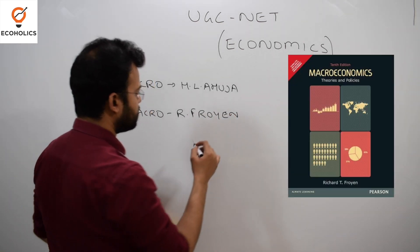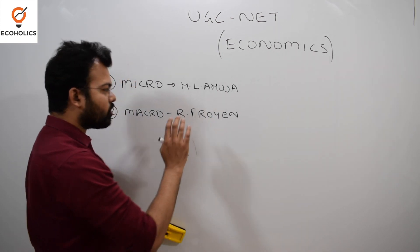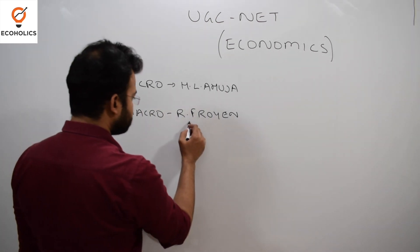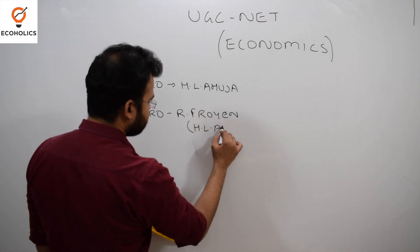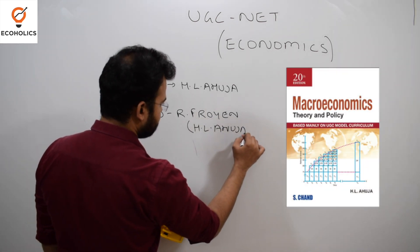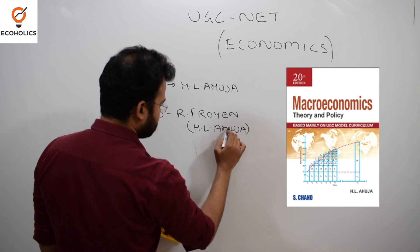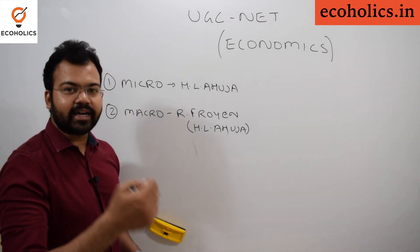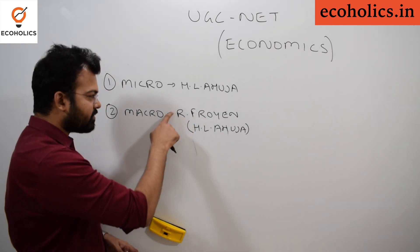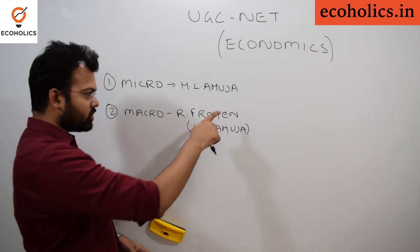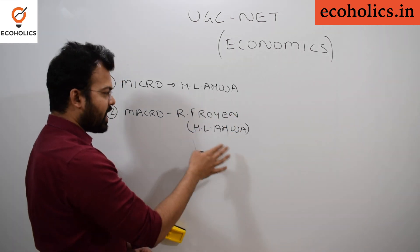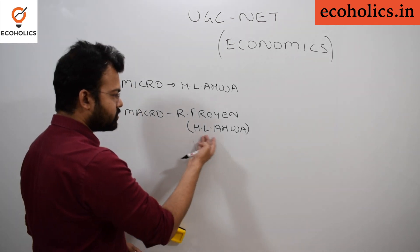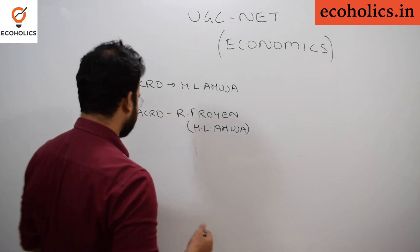The second part is macroeconomics. For macroeconomics, I generally prefer Richard Fran. Although this book doesn't cover all concepts, whatever it does cover is crystal clear. To supplement, you can also refer to H.L. Ahuja for macroeconomics — H.L. Ahuja gives you vastness and wide coverage, while Richard Fran gives you clarity about the concepts. For coverage of the wide syllabus you can refer H.L. Ahuja macroeconomics.